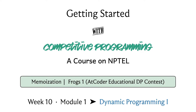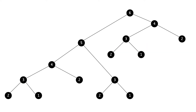Welcome back to the second segment of the first module in week 10. Continuing from the previous segment, we were looking at the recursion tree generated by our recursive algorithm. We concluded that this tree has an exponential number of nodes, leading to exponential time complexity, because time complexity is proportional to the number of function calls. We also asked you to think about whether you can identify any redundancy of computation in this recursion tree.